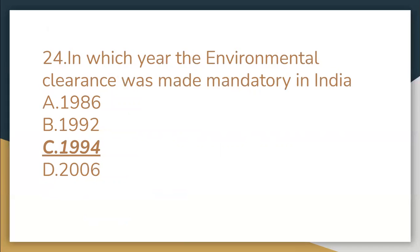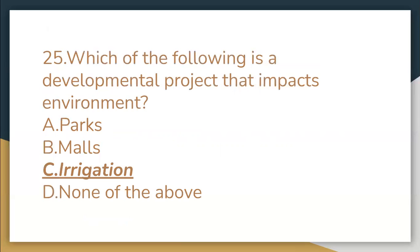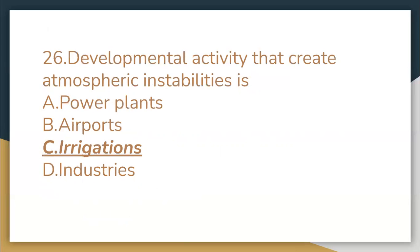In which year was environmental clearance made mandatory in India? 1994. Which of the following is a developmental project that impacts the environment? Irrigation. The developmental activity that creates atmospheric instabilities is irrigation.